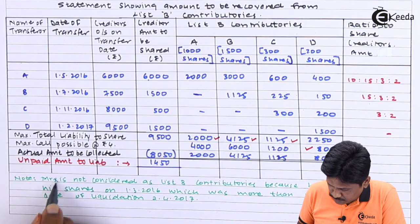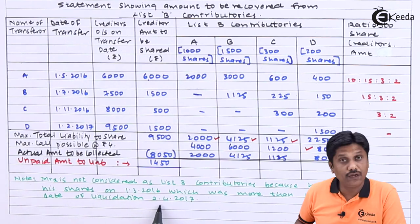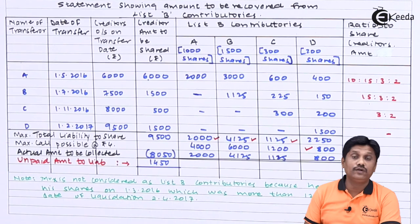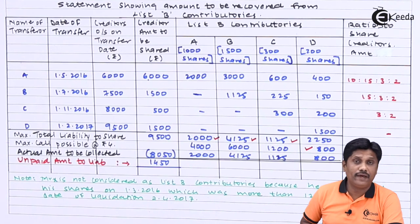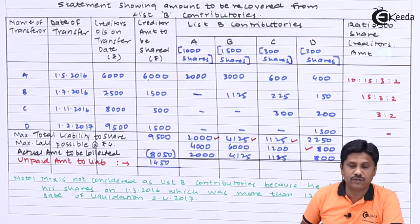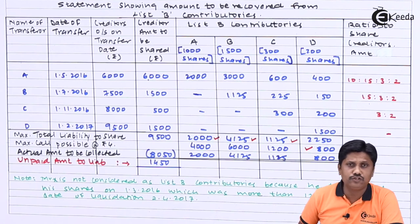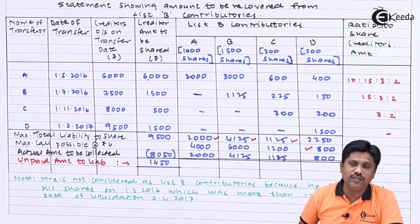Note: Mr. X is not considered a List B contributory because he transferred his shares on 1st March 2016, which was more than 12 months prior to the date of liquidation on 2nd April 2017. This question can come in your exam for a maximum of 8 marks, so understanding it is important — easy questions are your bank to score marks. I hope you have understood this solution; if there are any doubts please put them in the comment box. Please subscribe to our channel, press the bell icon for latest notifications, and share this link with your friends so they can also get the benefit. Thank you for watching. God bless you.